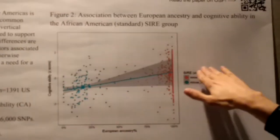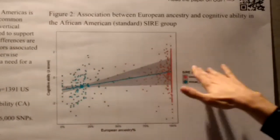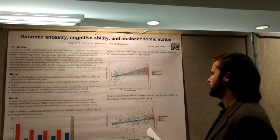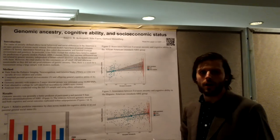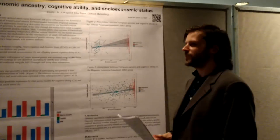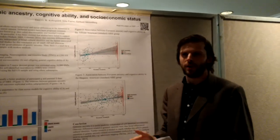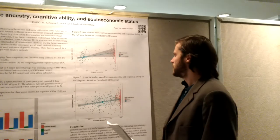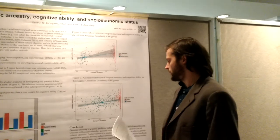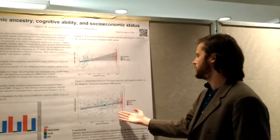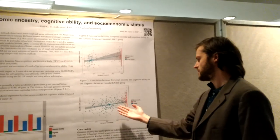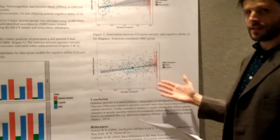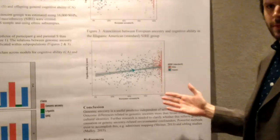The total predicted genetic gap is about 1.6 standard deviations, corresponding to roughly 22 IQ points, giving the 78 IQ figure. This is also seen in the Hispanic sample, though the Hispanic sample is problematic because...